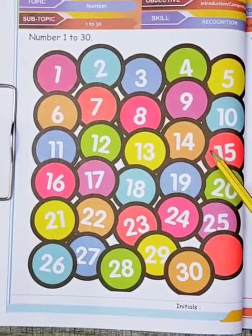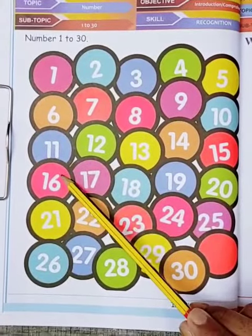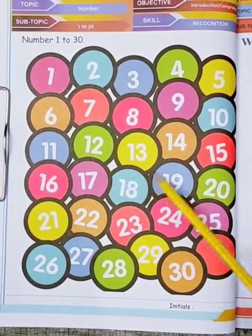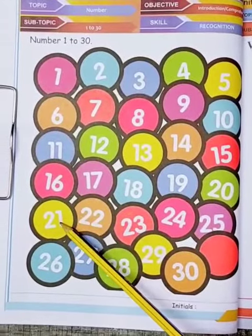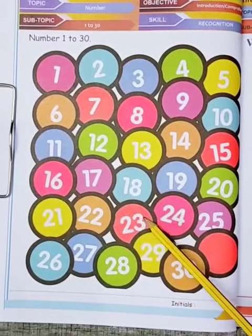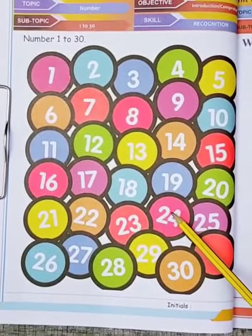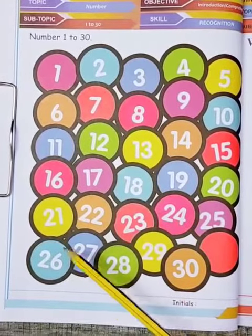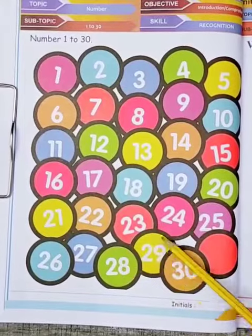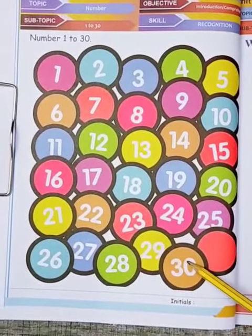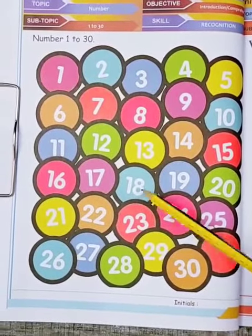Fifteen, sixteen, seventeen, eighteen, nineteen, twenty, twenty-one, twenty-two, twenty-three, twenty-four, twenty-five, twenty-six, twenty-seven, twenty-eight, twenty-nine, thirty. In this way we...